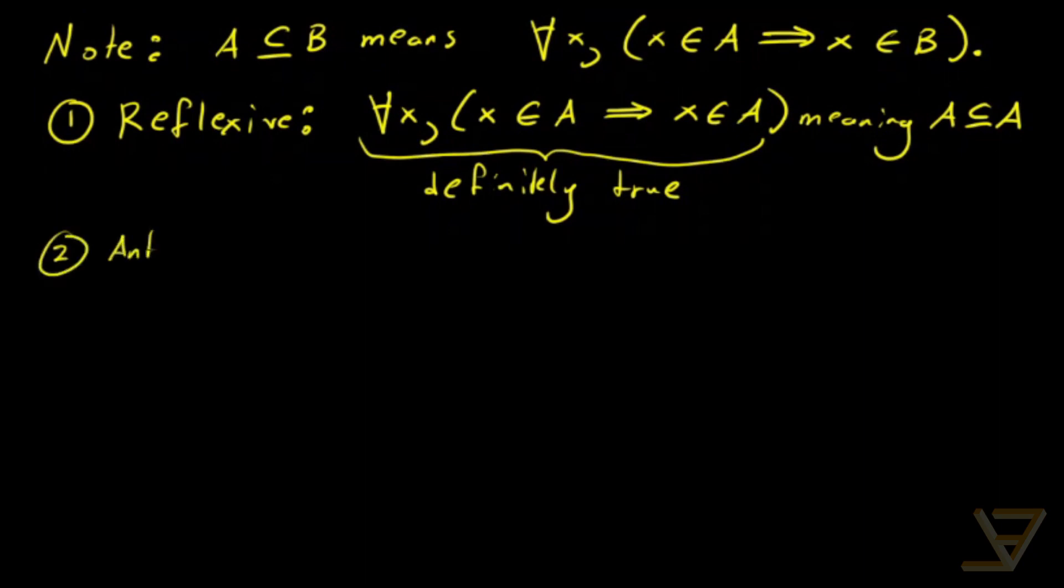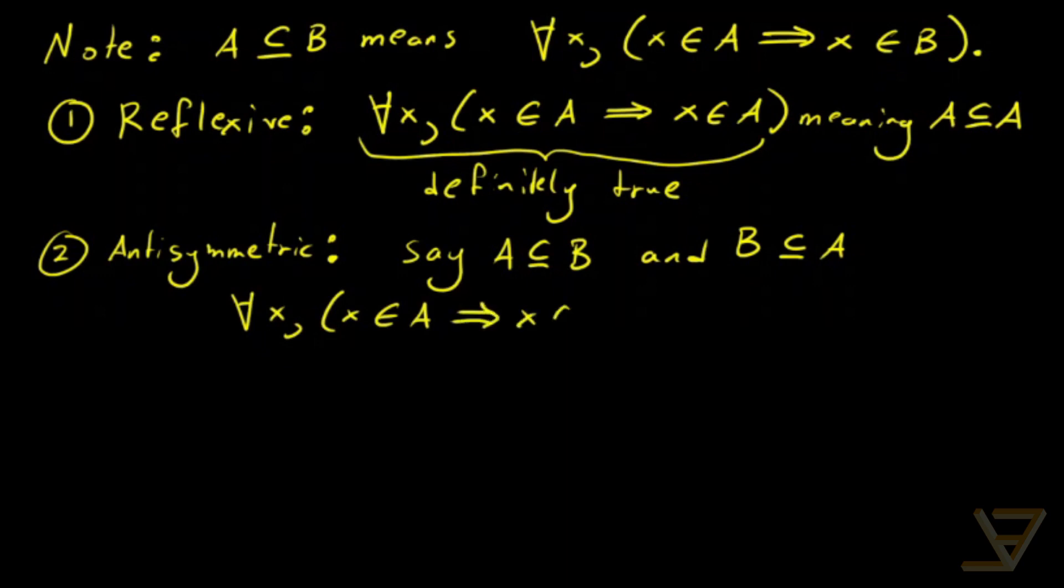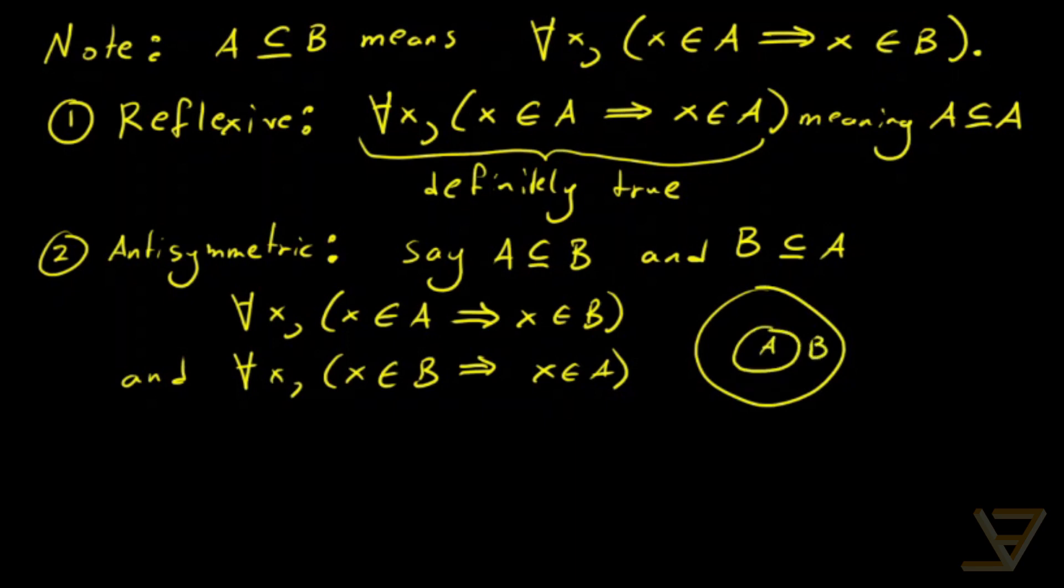Secondly, we want to prove anti-symmetry. This means we're going to suppose A is a subset of B, and B is a subset of A. So that means we're assuming for all x, x is an element of A implies x is an element of B. And we're assuming also that for all x, if x is an element of B, then x is an element of A. So really it looks like this. We've got A inside B, and we have B inside A.